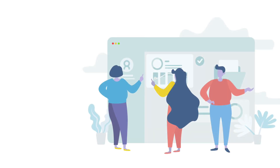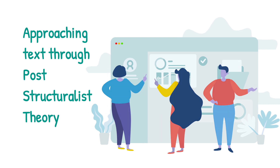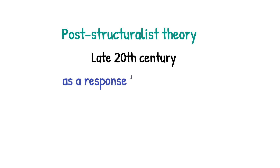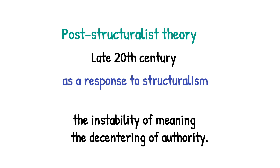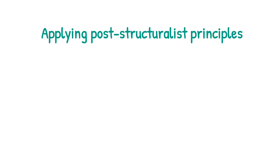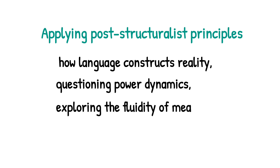Welcome back. Our today's topic is approaching text through post-structuralist theory. Post-structuralist theory emerged in the late 20th century as a response to structuralism, focusing on the instability of meaning and the de-centering of authority. Applying post-structuralist principles to a text involves examining how language constructs reality, questioning power dynamics, and exploring the fluidity of meaning. Let's break down some key concepts and apply them to examples.